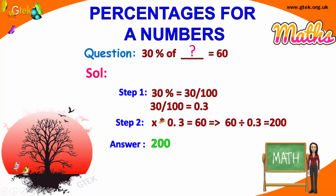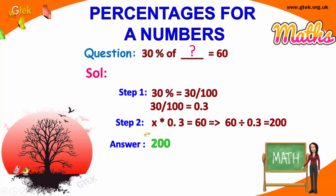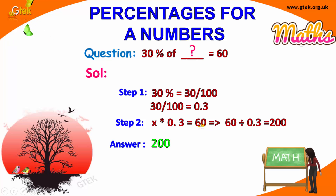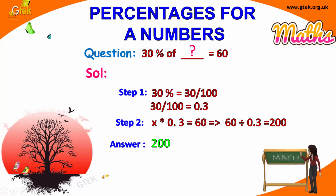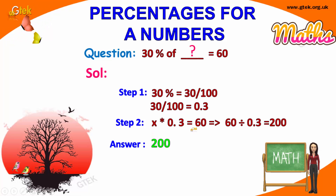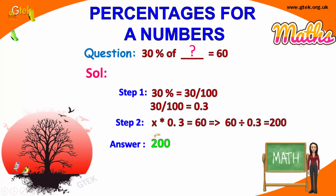So the total value is x. x into 0.3 is equal to 60. We get x is equal to 60 divided by 0.3, and that value is 200.